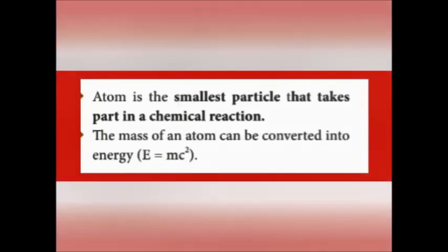Atom is the smallest particle that takes part in a chemical reaction. The mass of an atom can be converted into energy — this can be explained by Einstein's equation E = mc². These points, along with isotopes, isobars, and artificial transmutation, are all main postulates of modern atomic theory.